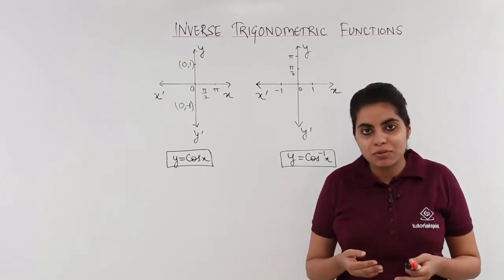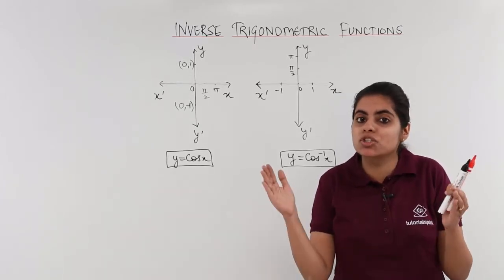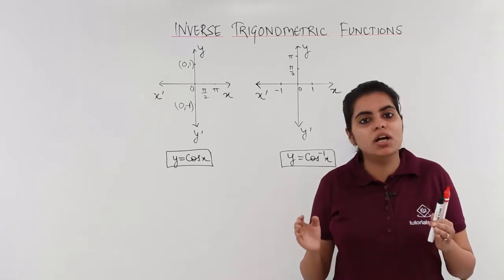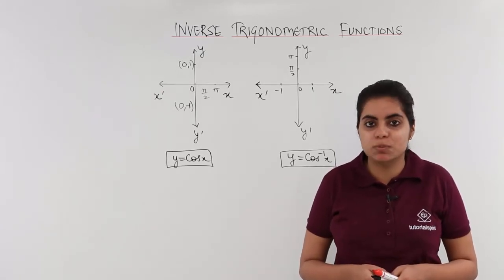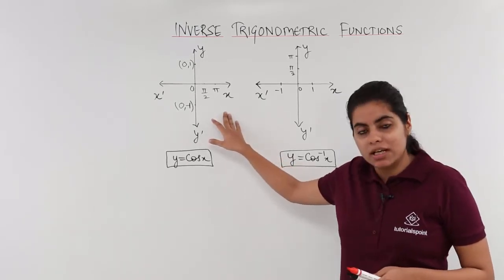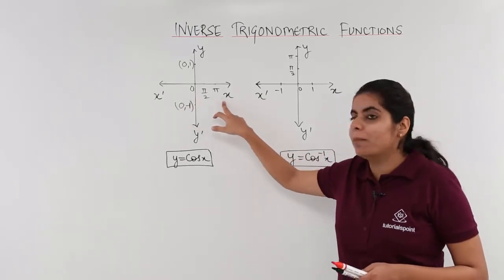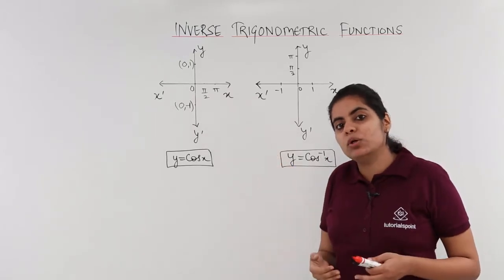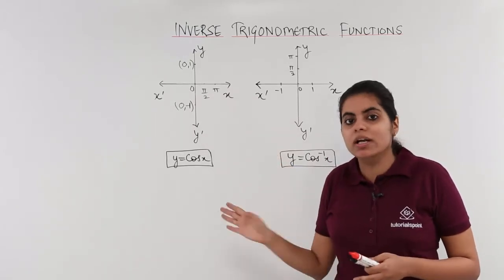So I have to see which branch to take, what to restrict so that my inverse is possible. I have here described the graph for the section 0 to pi and we will be drawing the graph accordingly only.